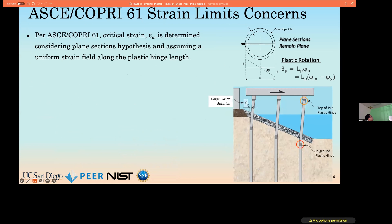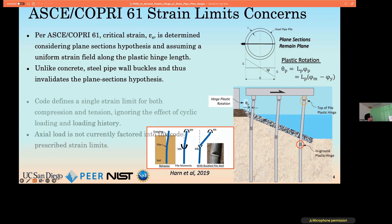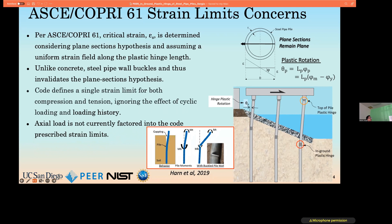A few concerns identified in the code: plain sections theory is used to calculate strains, and the code prescribes a constant plastic hinge length equal to twice the diameter, assuming uniform curvature distribution along that plastic hinge. However, unlike concrete, the walls of a steel pipe pile are susceptible to local buckling, which invalidates plain sections theory. Additionally, the strain limits prescribed do not differentiate between compressive and tensile strains, they ignore the effect of cyclic loading or history dependence, and they do not account for the potential presence of axial load.